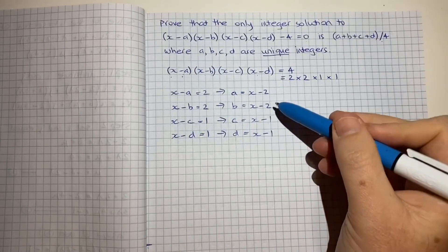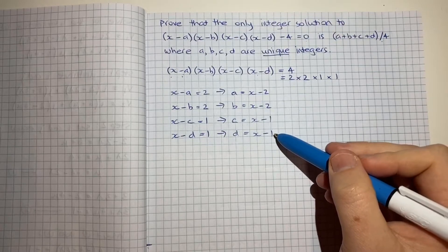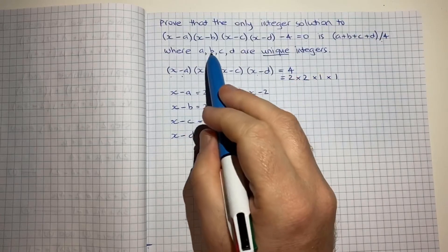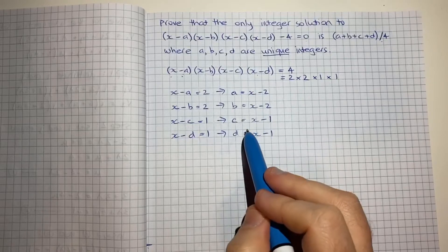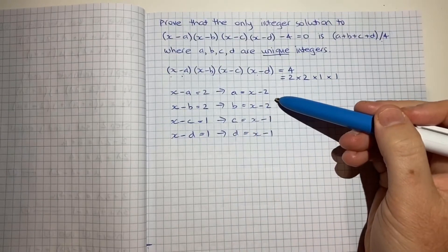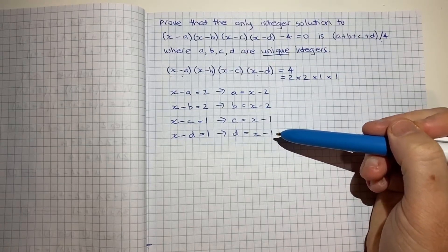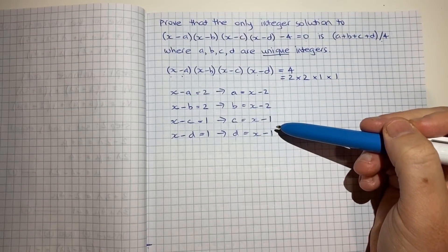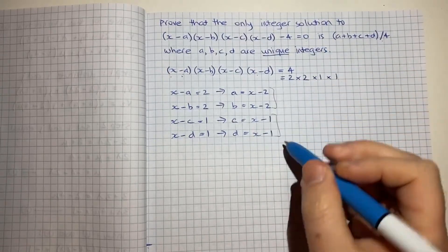Now that all so far seems okay except we start to get a problem or we hit our constraint. Because we're told a, b, c and d are unique integers yet here we see a and b have the same formula and c and d have the same formula. So we can't fully rely on this. We can partly rely on it but we need another trick I guess you could say or another way of looking at this. Because right now we can't have these two and these two solutions being the same.